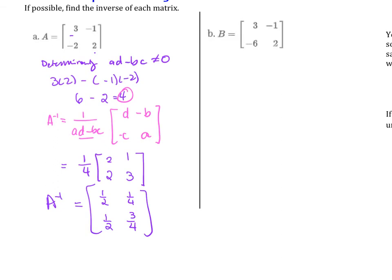Let's do one more example. We're going to multiply 3 times 2 minus negative 1 times negative 6. This is 6 minus a positive 6, and that is 0. Therefore, this is not invertible, and so we can stop there.